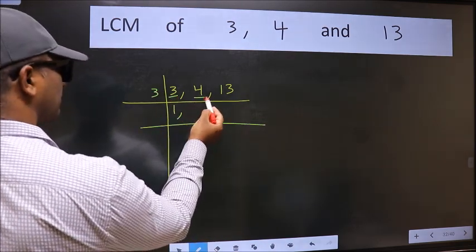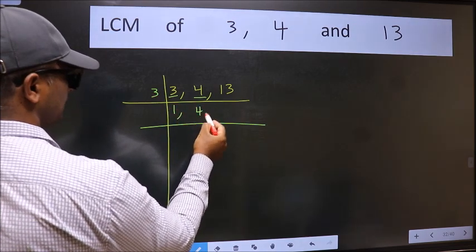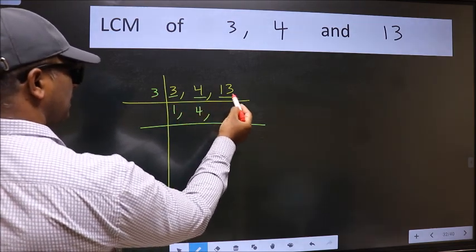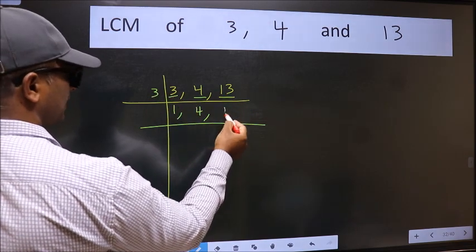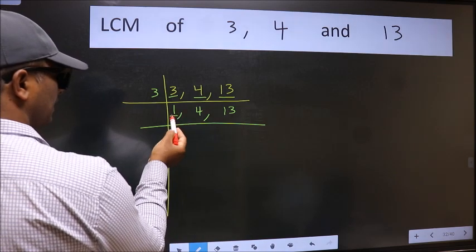The other number 4 not divisible by 3 so we write it down as it is. The other number 13 not divisible by 3 so we write it down as it is. Now we got 1 here.